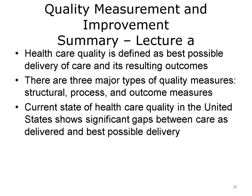This concludes Lecture A of Quality Measurement and Improvement. In summary, health care quality is defined as the best possible delivery of care and its resulting outcomes. There are three major types of quality measures: structural, process, and outcome measures. The current state of health care quality in the United States shows that there are significant gaps between care as delivered and the best possible delivery.